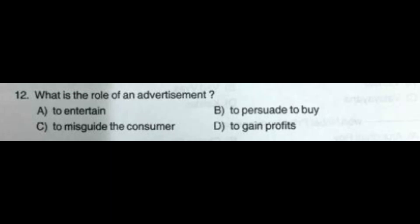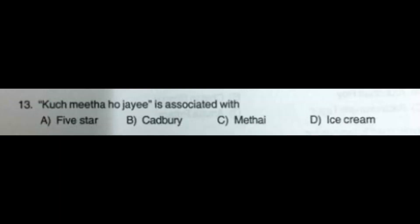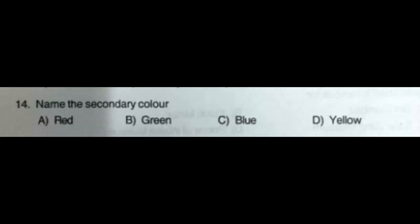The correct answer is option B: To Persuade to Buy. Question number 13: 'Kuch Meetha Ho Jaye' is associated with — option A: Five Star, option B: Cadbury, option C: Mithai, option D: Ice Cream. The correct answer is option B: Cadbury.